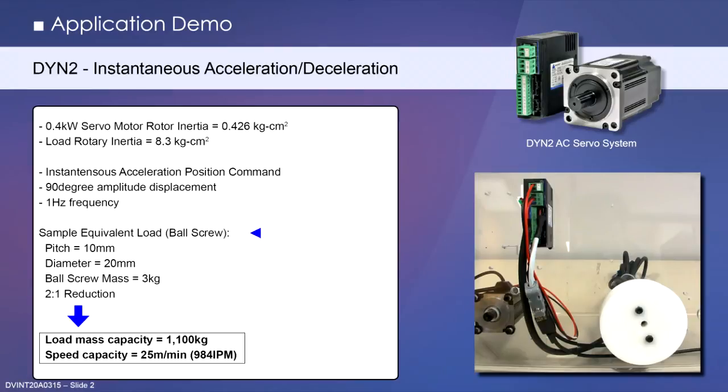The equivalent load capacity for this 20 times load inertia on a sample ball screw system shown is calculated at approximately 1100 kilograms at 25 meters per minute rapids.